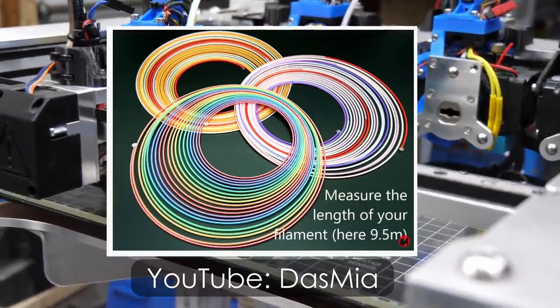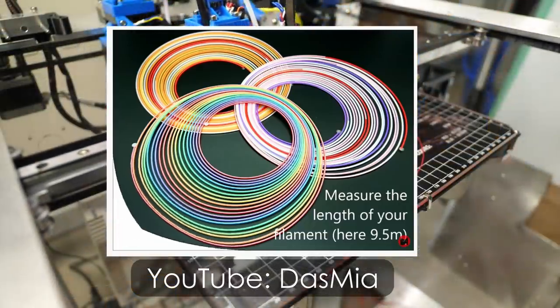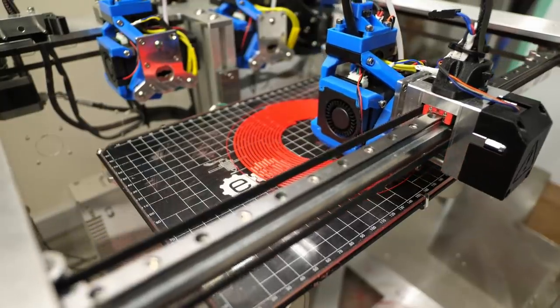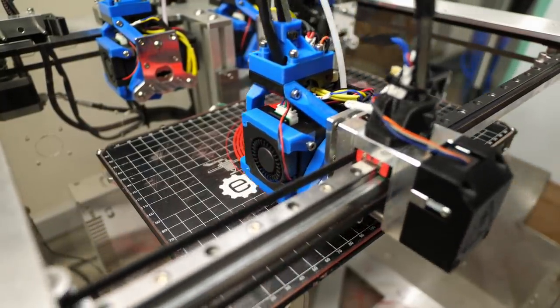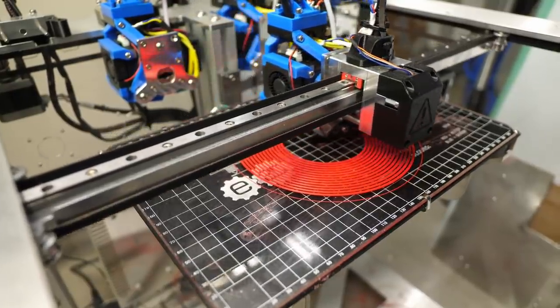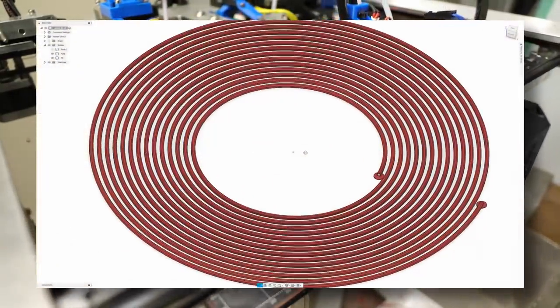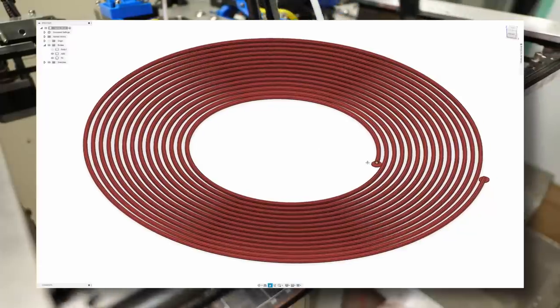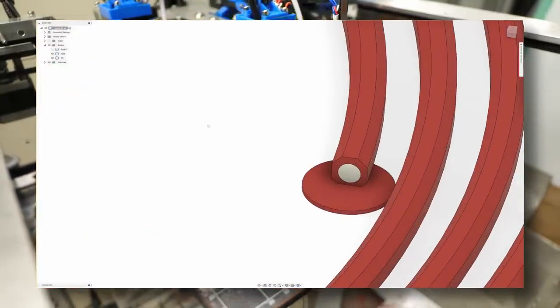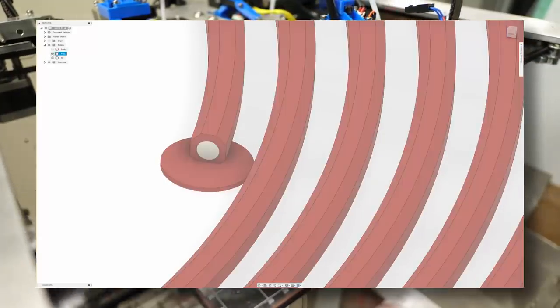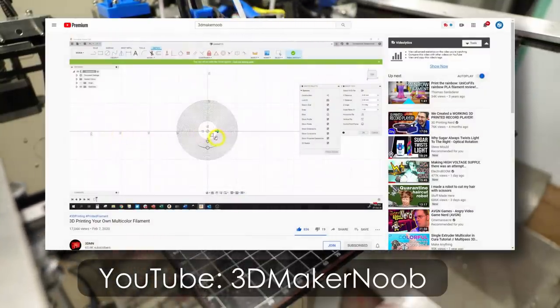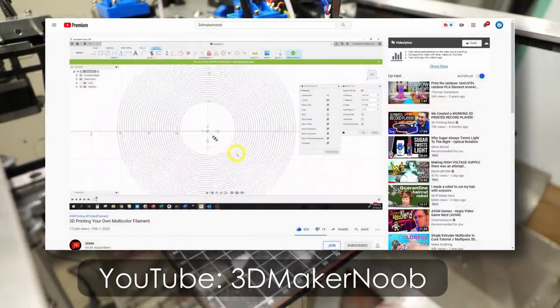But instead of printing sections of whole layers of different colored filaments, I'll be using my E3D toolchanger to directly print a filament spiral that uses different materials for the core and the hull. The process is pretty simple and I created a model for the filament spiral in Fusion 360 which consists out of two parts. One is the core, the other one is the outer section. If you are interested in the design process, check out 3D Maker Noob's detailed video on it.